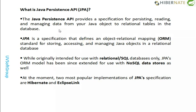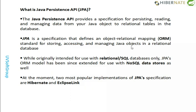JPA — Java Persistence API — is the specification for persisting, reading, and managing data from your Java objects to relational tables in a relational database. Initially it was based on SQL relational data models, but later it also came to play in the NoSQL world. JPA defines object-relational mapping as a standard, with standard sorting and functionality for accessing and managing Java object models.